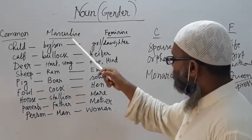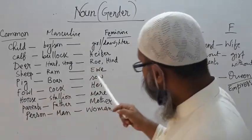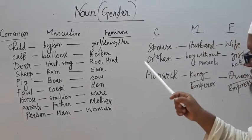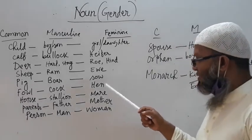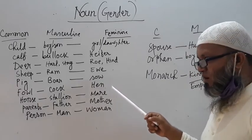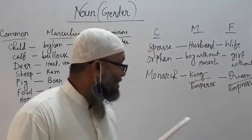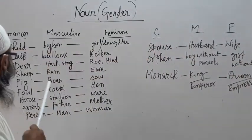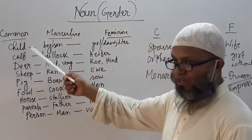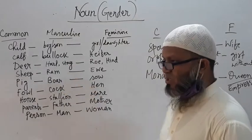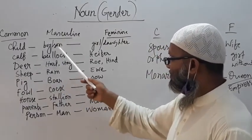And there are four kinds of gender. I have written today some different types of words which are used every now and then. We felt that we face some problems with those words. So I would like to clear those words if you have a look. That's why I have written 'child,' which is common gender — it may be male or female, that means boy or son.